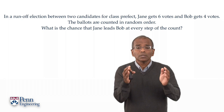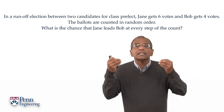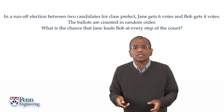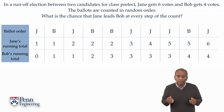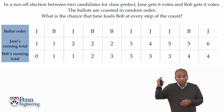Of course Jane wins the election, but as you count, is it the case that Jane took an early lead and never relinquishes it? Here is a particular instance of this problem. Imagine you have 10 ballots cast in this particular order: starting with a ballot for Jane, then a ballot for Bob, then a ballot for Jane, and so on. Six in total for Jane, four in total for Bob.